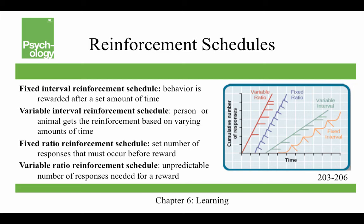A fixed interval reinforcement schedule rewards behavior after a set amount of time. For example, in a hospital, a patient may press a button for pain relief every 20 minutes as set by the doctor. This is the least productive schedule of reinforcement because once you've pressed the button and gotten the pain relief, pressing more doesn't get you more — it's going to be 20 minutes before you get more. So it's also the easiest one to extinguish.